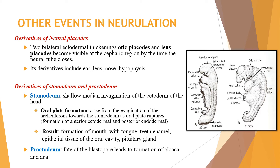For derivatives of the neural placodes: two bilateral ectodermal thickenings — the otic placodes and lens placodes — become visible at the cephalic region by the time the neural tube closes. Their derivatives include the ear, lens, nose, and hypophysis. The otic placode relates to hearing and the lens placode relates to the eyes.